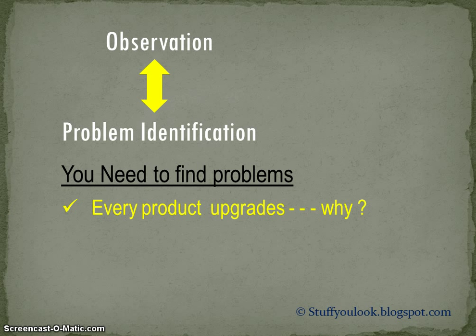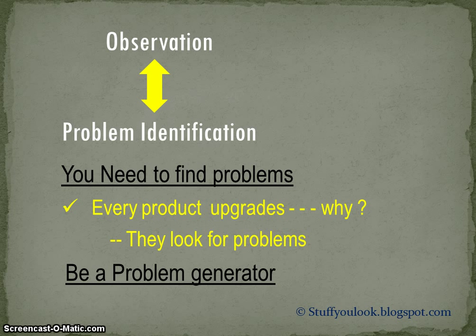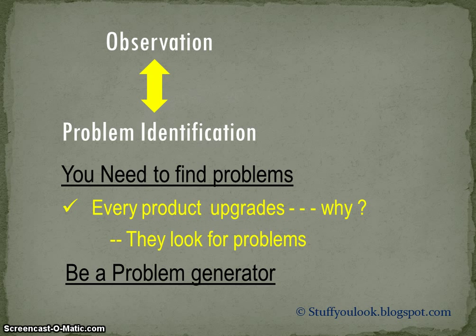I combined observation and problem identification under a single heading because when you start observing things, you will come to know some problems as well as alternatives. Problem identification is one important tool for design and design sketching. Every product undergoes frequent changes in design, usability and functionality — they regularly upgrade. The companies look for problems and developments by analyzing the users. Even the CEED examiners expect the same from you. So, be a problem generator as well as a solver. For example, take day-to-day things like a water bottle, identify or generate problems associated with it, make a list and develop a new concept.